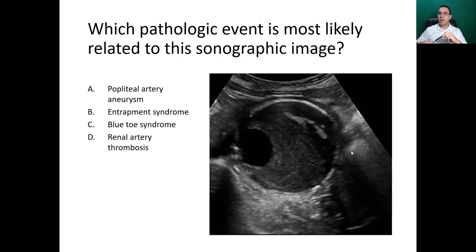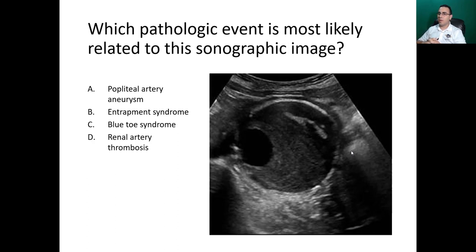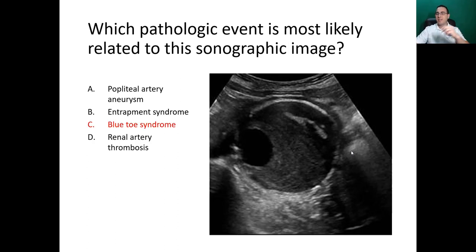Which pathologic event is most likely related to this sonographic image? The image shows a large abdominal aortic aneurysm (AAA). The options are: popliteal artery aneurysm, entrapment syndrome, blue toe syndrome, and renal artery thrombosis. Remember, a small piece of thrombus or plaque can detach and travel to the distal circulation, causing blue toe syndrome. The answer is C — blue toe syndrome.